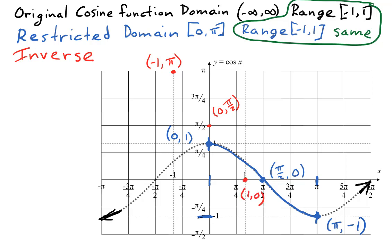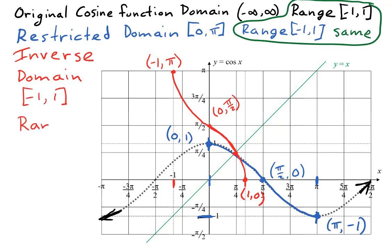We also look for the y equals x line, which goes through all points where the x and y coordinates are the same. Any point where the cosine curve crosses that line is shared with the inverse — we find one such point. Using those points, we sketch the inverse cosine function. Its domain is from negative one to one, and its range is from zero to pi. The range and domain for the inverse are the same intervals as the domain and range of the restricted original function, but with opposite roles — because we switch the order of x and y. This red curve is the inverse cosine, written y equals cosine inverse x, or y equals arc cosine x.